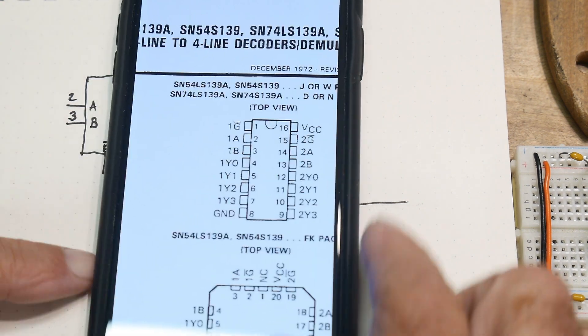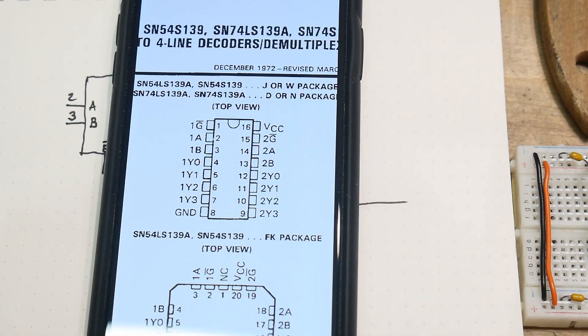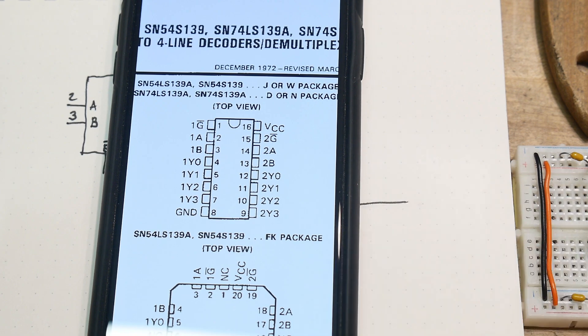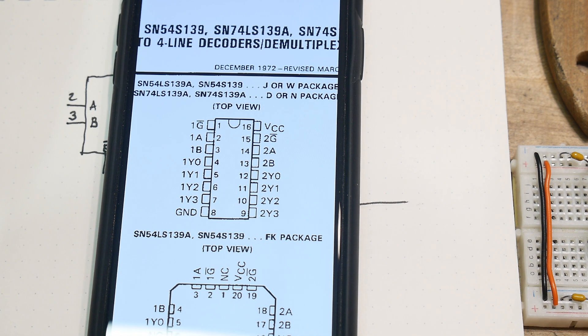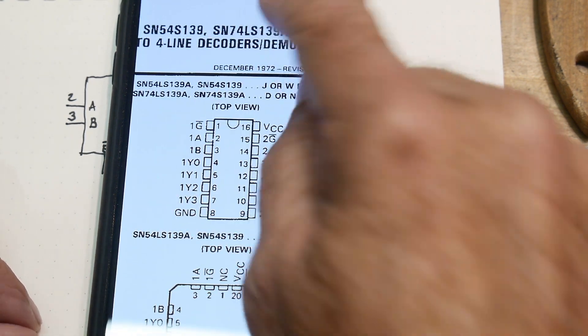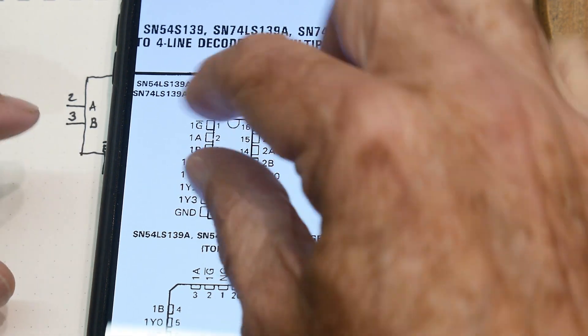So chip of the day was the Texas Instrument. Who made this one? I don't remember. I don't remember whose insignia that is. Anyway, it wasn't TI. This is a TI data sheet. It was an LS 139. Here's the pinout.